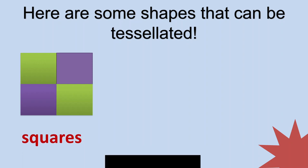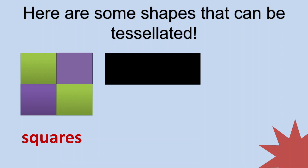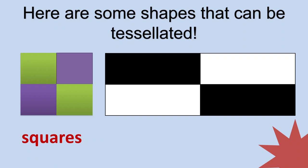We can also use this shape. What do you call the shape? A rectangle. We can combine the rectangles to form a tessellation. As you can see, there are no gaps or overlapping edges.